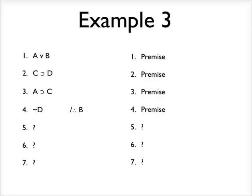All right, here's another example of a proof. Again, I have it set up as the proofs will always be set up, with the premises listed first, and then to the right of the last premise, I have the conclusion that we're trying to derive. So this is what we're trying to get on the last line of our proof.